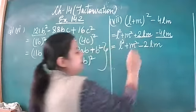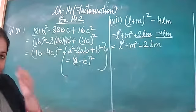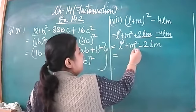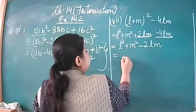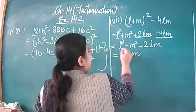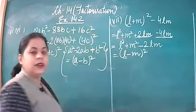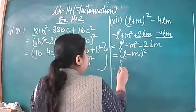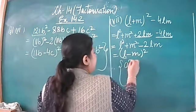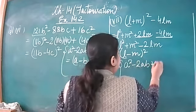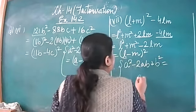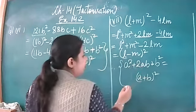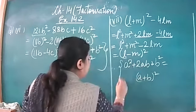Because 2 minus 4 is minus 2. This can be written as a squared plus b squared minus 2ab, which equals (a minus b) whole square. So here we have used two identities — first (a plus b) whole square to expand, and then (a minus b) whole square to factor.